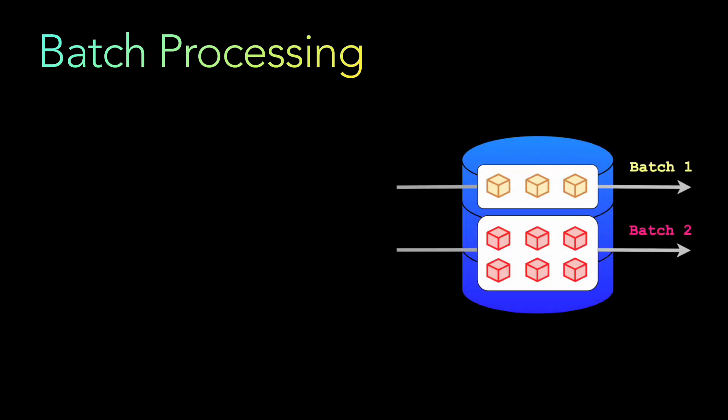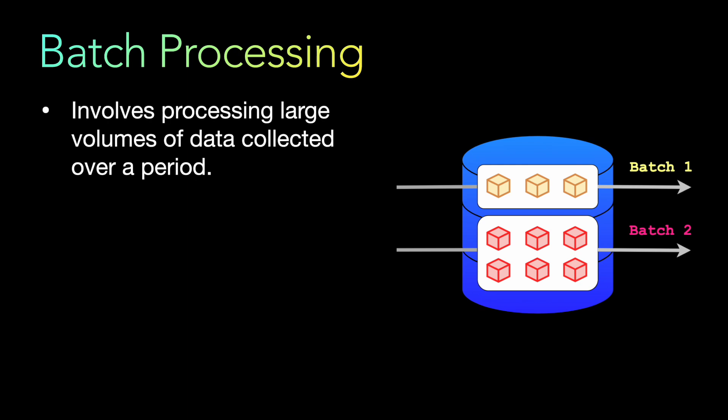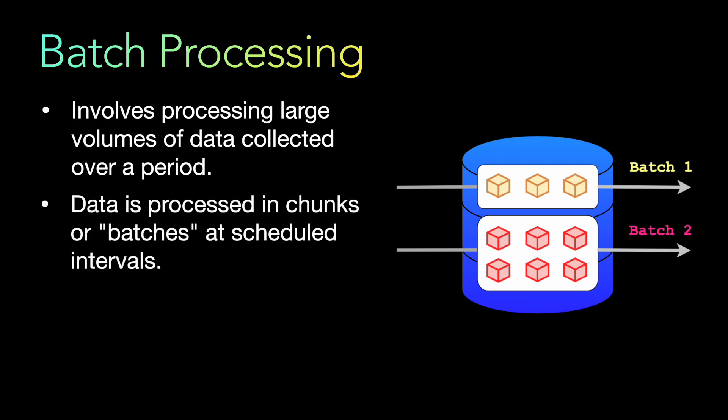Starting with batch processing — what is exactly batch processing? Batch processing involves processing large volumes of data collected over a period of time, in what we call batches. These data processing chunks or batches can be at scheduled intervals or on a need basis, depending on when a call or request is coming from the client — for example, a batch GET API.